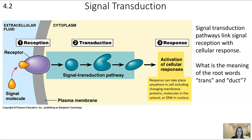Reception is where the receptor meets with the signal molecule. Notice that the signal molecule never itself moves inside. Instead, the reception changes some part of the receptor, which triggers a signal transduction pathway — a series of changes, a series of molecules triggered — and then it ends in some sort of response. The response can take place anywhere in the cell, including changing the membrane proteins, molecules in the cytosol, or DNA in the nucleus.